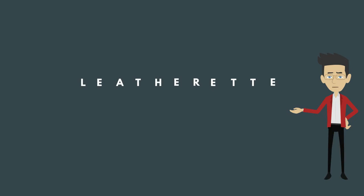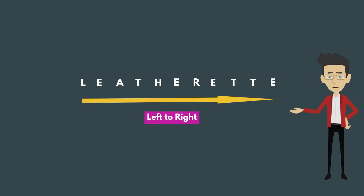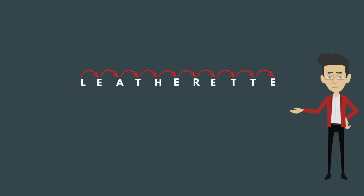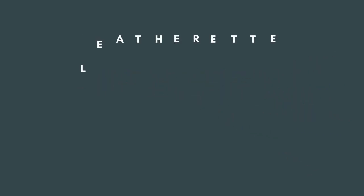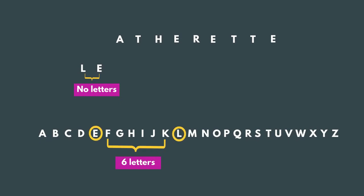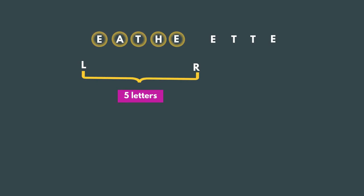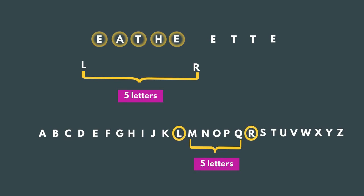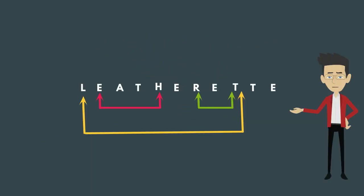Let's see how to match pairs of letters forward and reverse. Forward means from left to right. We have to check each and every letter with other letters in the word. For example, take the pair L-E: there are no letters between L and E in the given word, but in the English alphabet there are six letters between L and E, so they are not the same — this is not a pair. Checking all letters, the valid forward pairs are L-T, E-H, and R-T.